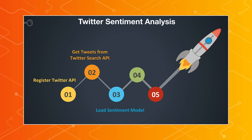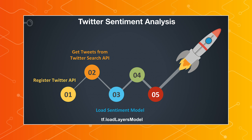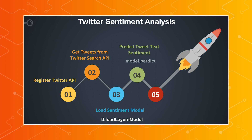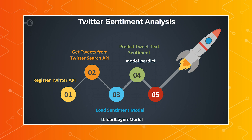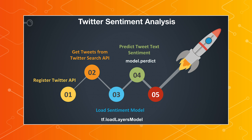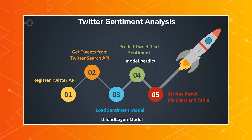The third step is to load the sentiment model into the browser. This is done by calling the tf.loadLayersModel function inside TensorFlow.js, and then the model is loaded into the browser. The fourth step is to predict the tweet text sentiment — for each tweet, feed the text through the model using the model.predict function inside TensorFlow.js. It performs sentiment analysis and returns a score between 0 and 1 to indicate whether it's positive, negative, or neutral. The last step is displaying the result in the pie chart and grouping those tweets into the three classifications.